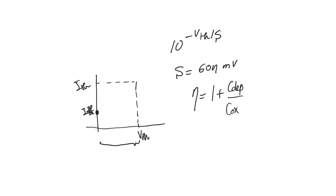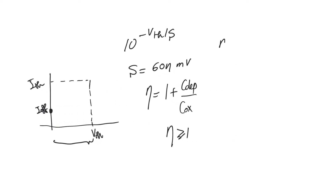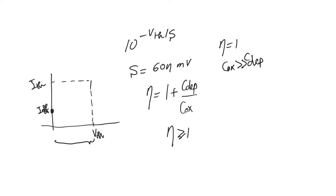Eta is at best equal to 1 — essentially eta is greater than or equal to 1. Eta equals 1 when C_oxide is much greater than C_depletion. This starts to give us an idea of what subthreshold conduction is about.